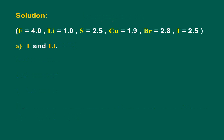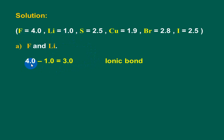First, Fluorine and Lithium. The electronegativity of Fluorine equals 4 and that of Lithium equals 1. The difference in electronegativity: 4.0 minus 1.0 equals 3.0. Since the difference is larger than 1.7, the bond is an ionic bond.